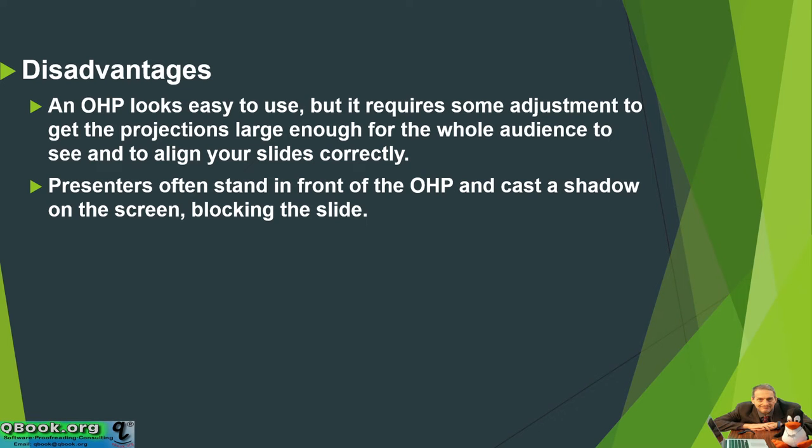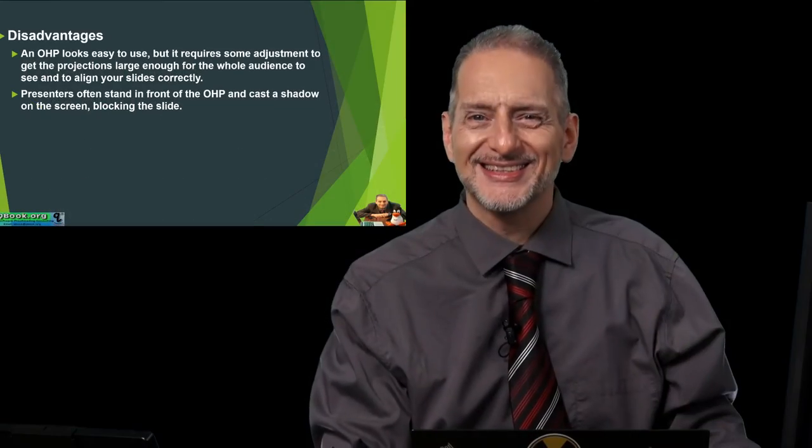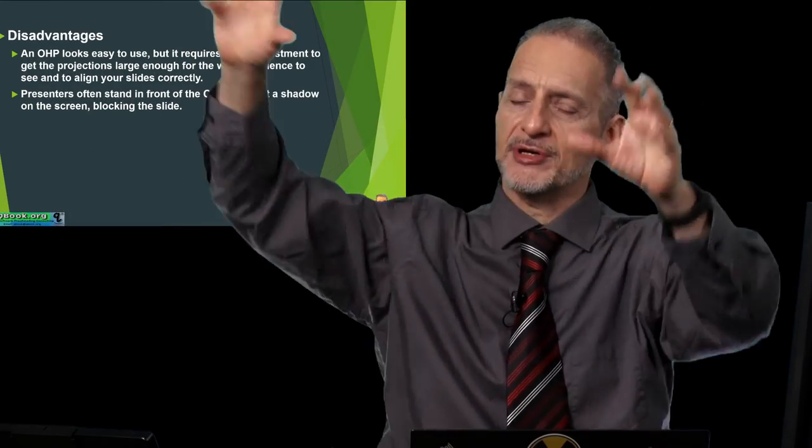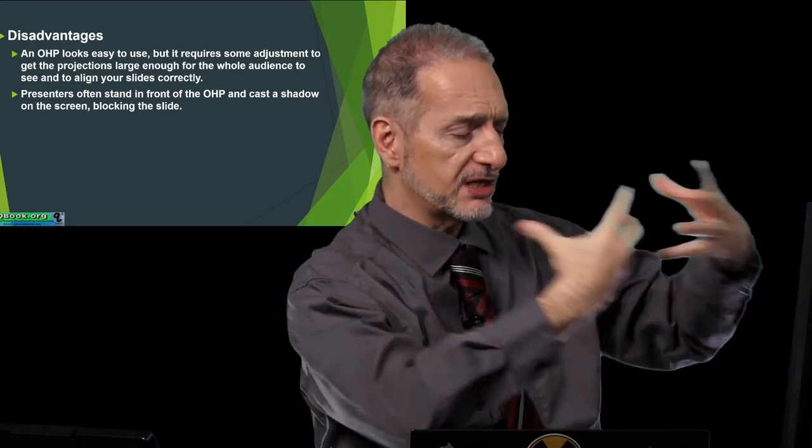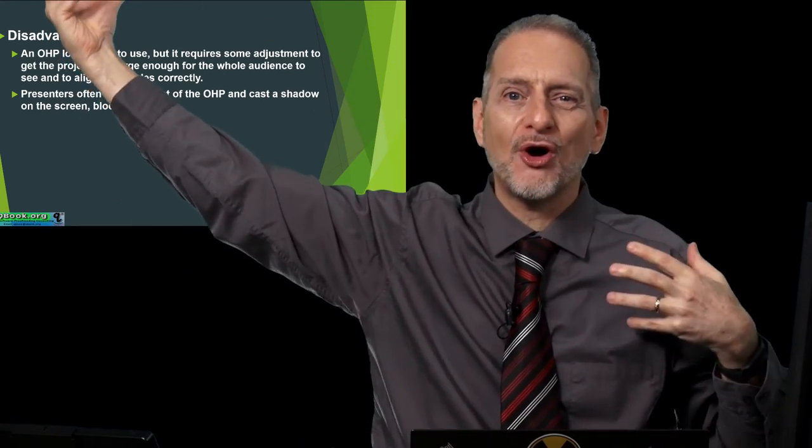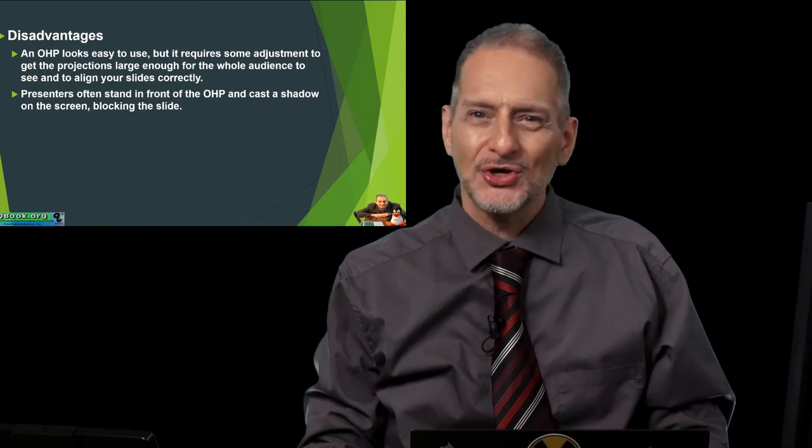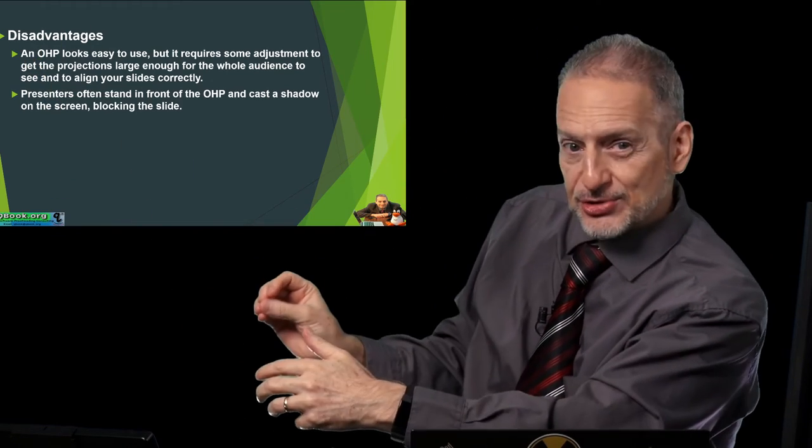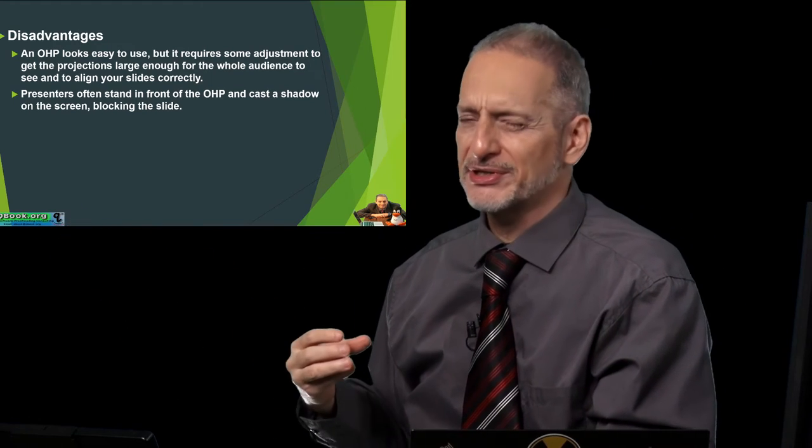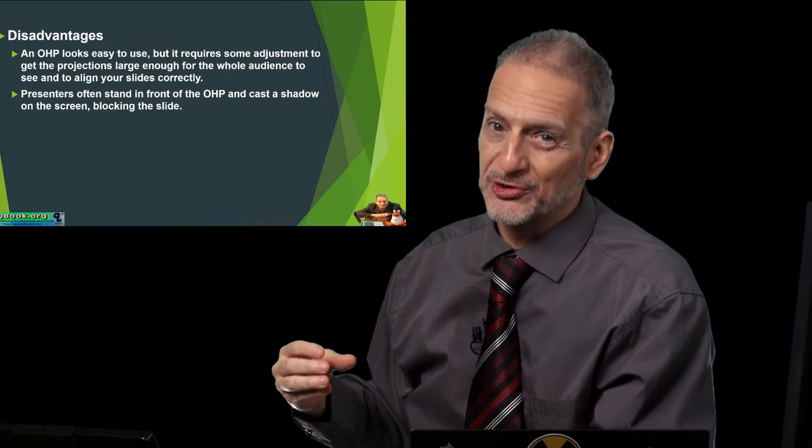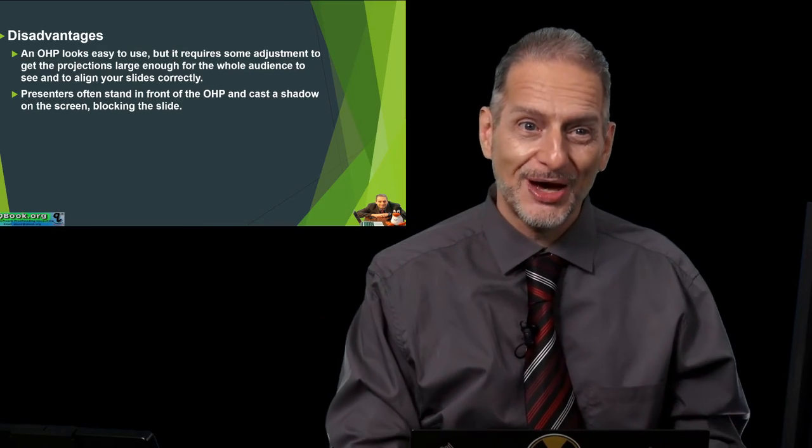Presenters often stand in front of the OHP and cast a shadow on the screen which blocks the slide. This basically just means you need to practice. Because the projector is this machine that projects up on the wall, people like to stand in front of it and write on it. But when you stand in front of it, you're making a shadow on the wall and then no one can see your presentation. So, you need to stand next to it while you're writing kind of sideways. And that's not supernatural. That's not very comfortable. But that's the way you have to do it.